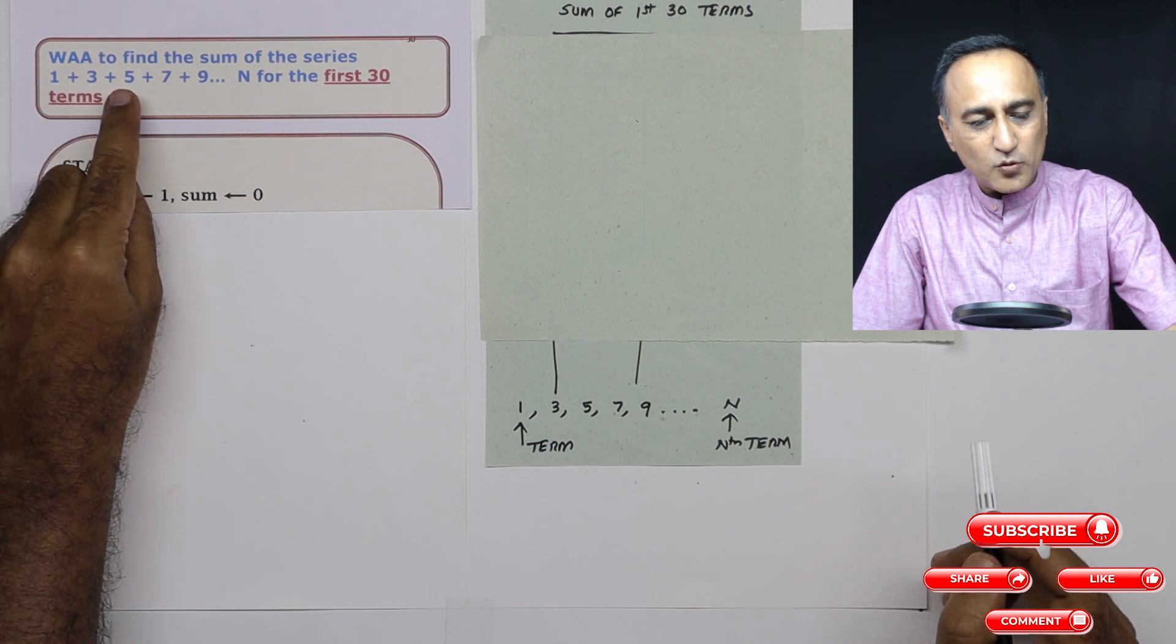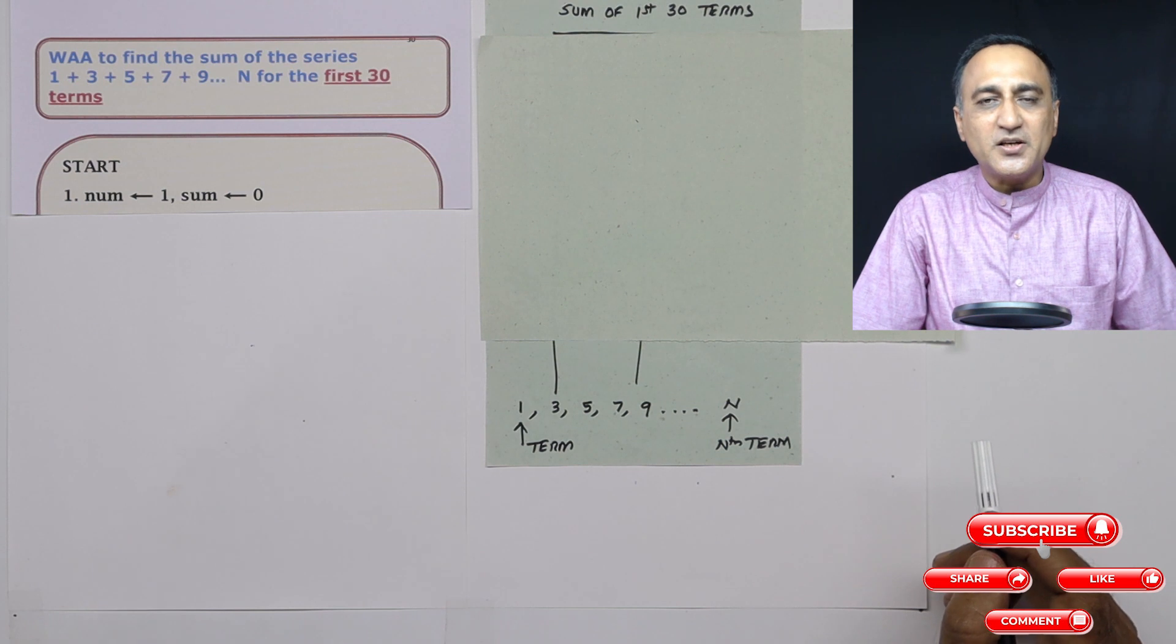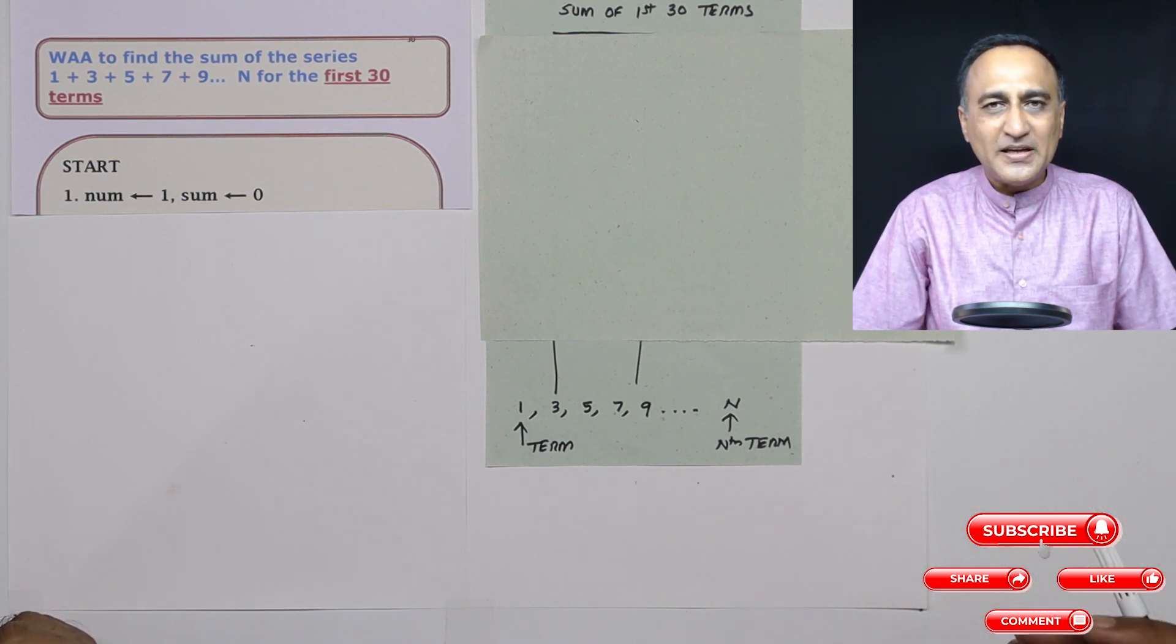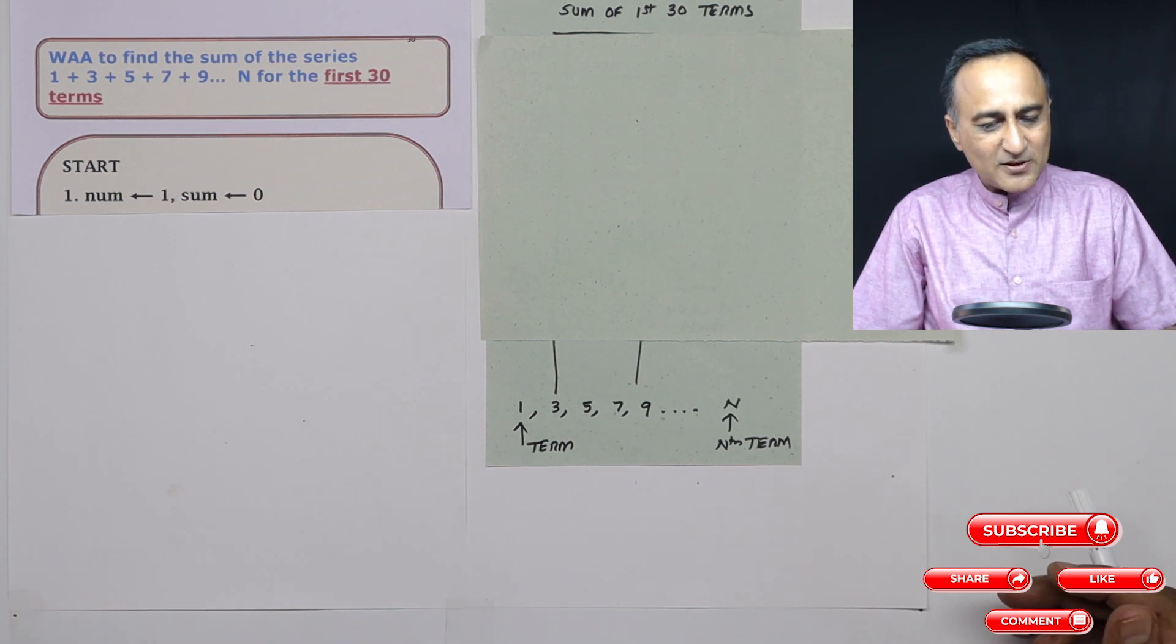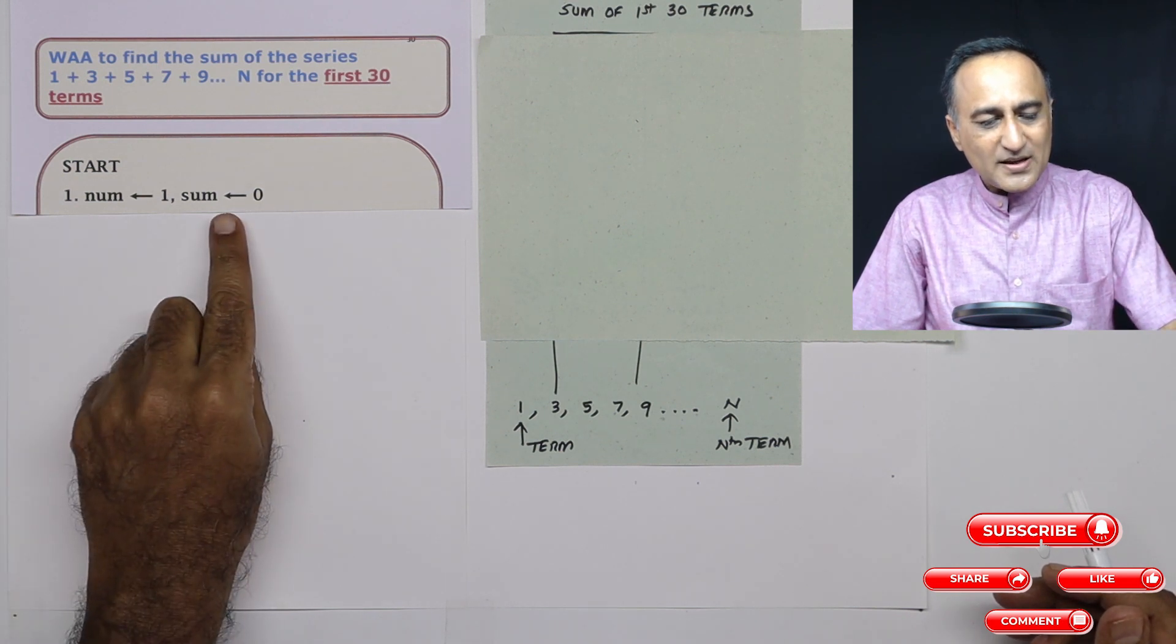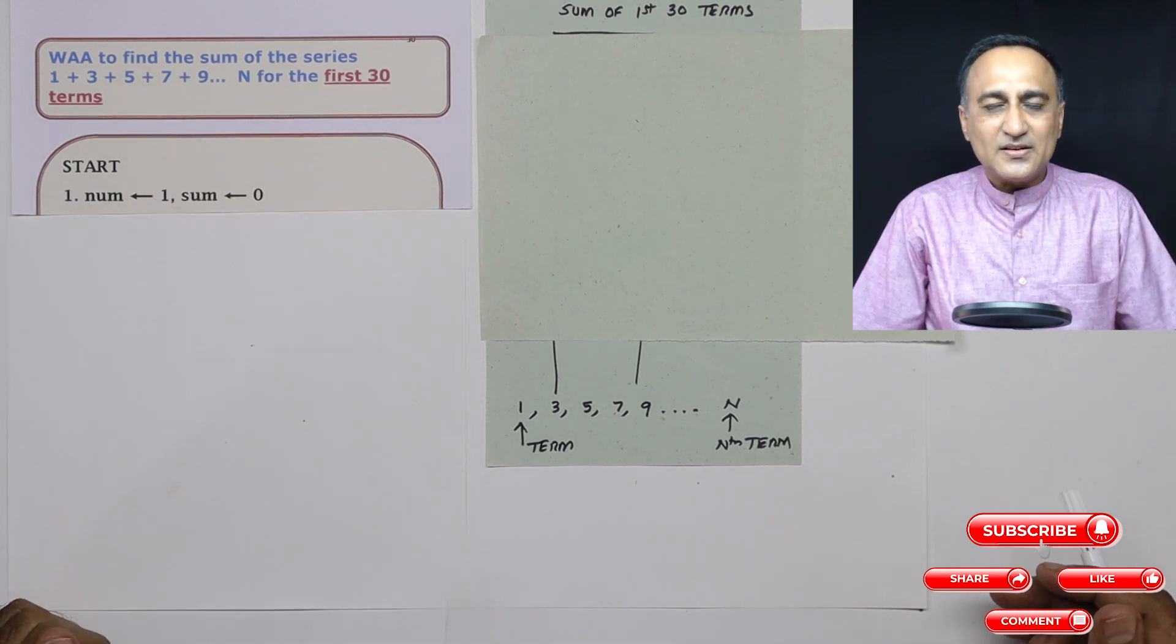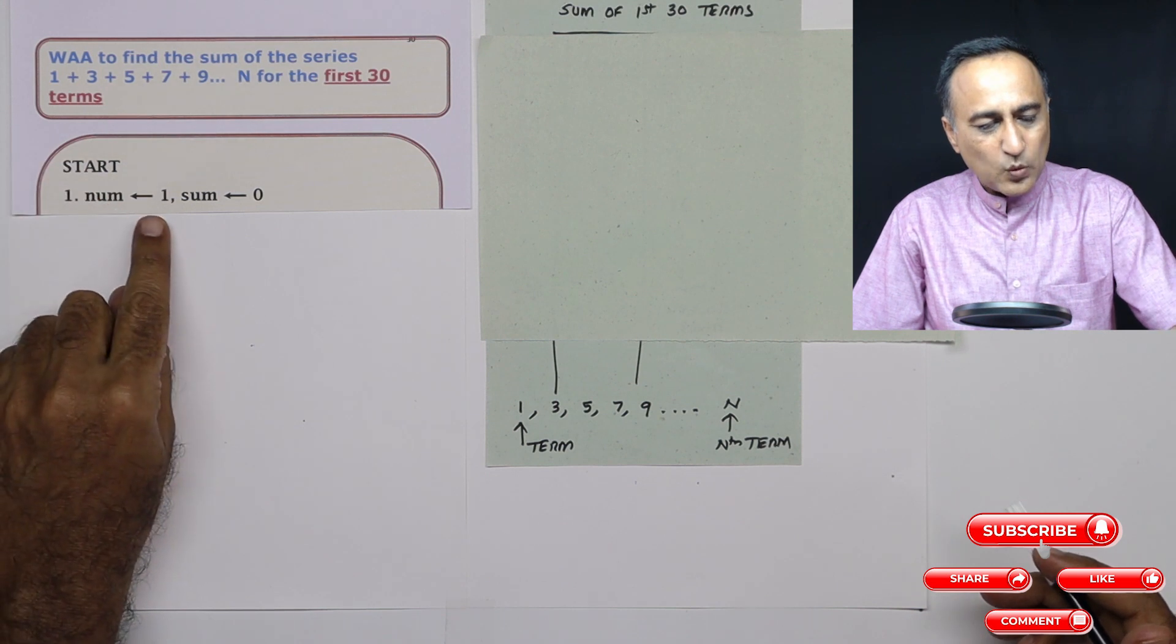That means 1, 2, 3, 4, 5 continue till you reach 30 terms. The 30th term is going to be the number 59. So what we are going to do is in order to find the sum of the first 30 terms, I need one variable called as sum to store the sum of 1 plus 3 plus 5 plus 7 all the way till the first 30 terms.